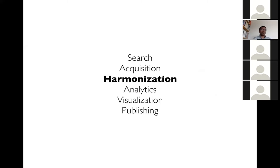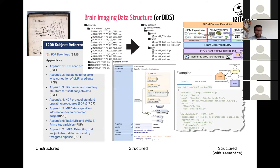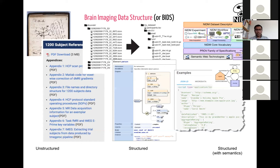I won't talk much about data acquisition from the MR site — that's fairly well established — but we've been doing things to convert incoming data into structured form, and that's where harmonization comes in. A lot of information out there is unstructured, and while tools are being built for unstructured information, several efforts we're part of look at structured information for imaging data representation as well as phenotypic details.